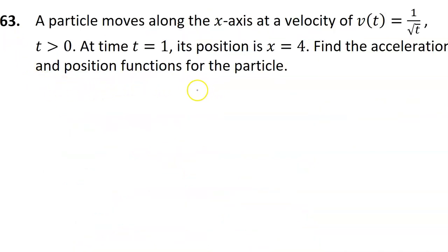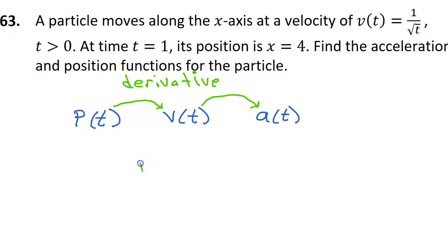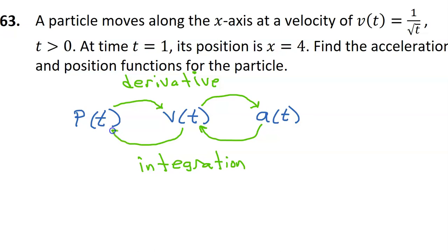Problem number 63 relies on the relationship between position, velocity, and acceleration, so let's do a brief little side lesson. Here's my position function, velocity function, and acceleration function. They are related by differentiation and integration. If I take the derivative, I'm moving in this direction — the derivative of position is velocity, and the derivative of velocity gives me acceleration. If I do integration, we move in the opposite direction: integrating an acceleration function gives a velocity function, and integrating a velocity function gives a position function.